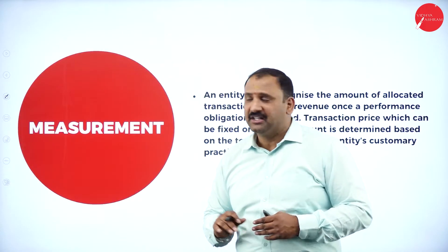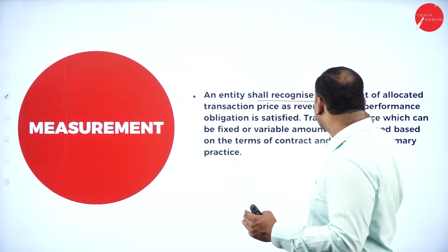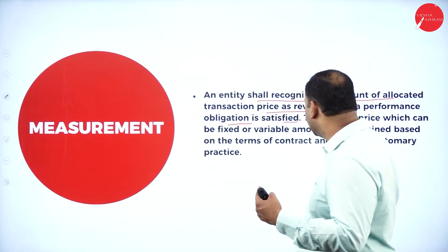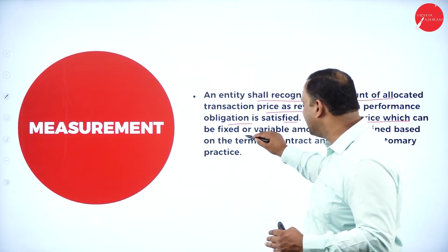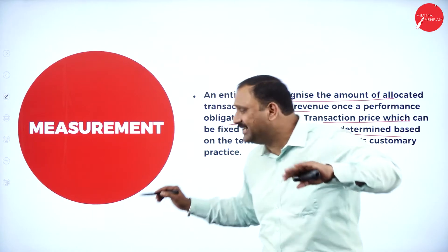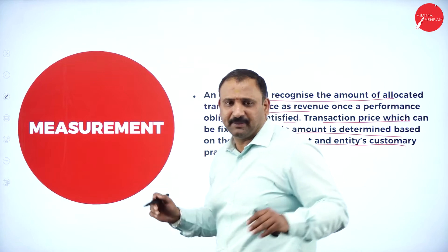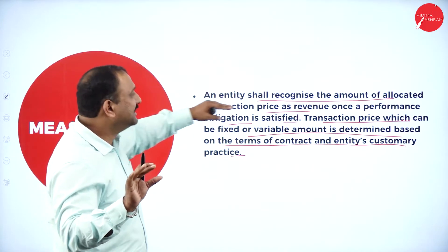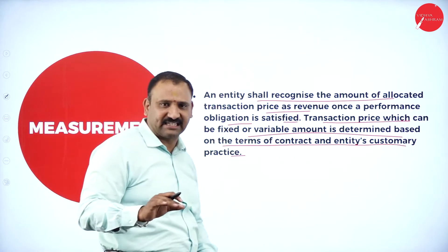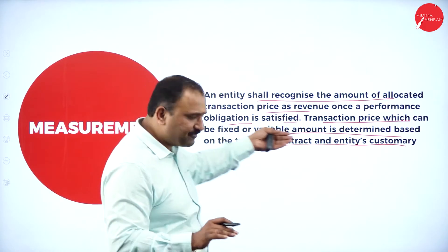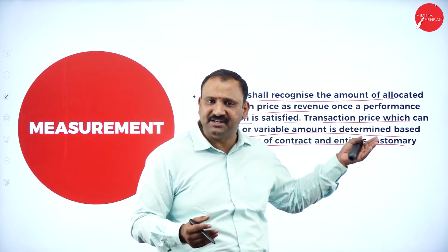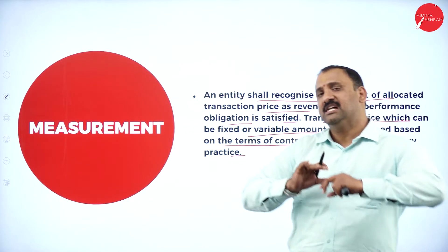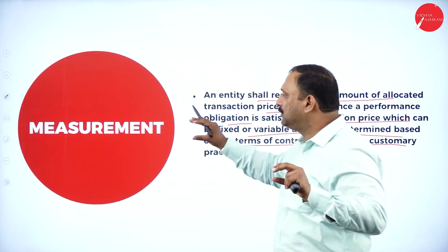Regarding measurement: an entity shall recognize the amount allocated as transaction price as revenue once the performance obligation is satisfied. The transaction price, which can be a fixed or variable amount, is determined based on the terms of the contract and the entity's customary practice. So whatever the factors - based on those terms and conditions - we will be able to recognize and measure the revenue.